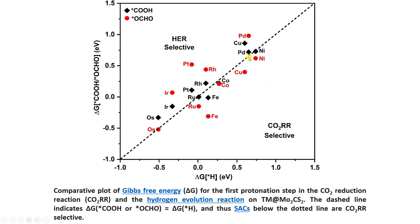For the PD catalyst, the H adsorption energy is around 0.5 eV. If you see that the COOH adsorption energy is more than the H+ adsorption energy, that indicates the catalyst is HER selective. Similarly, the copper catalyst is also HER selective, in contrast to CO2RR selective catalysts.